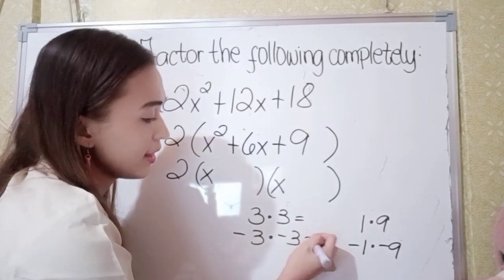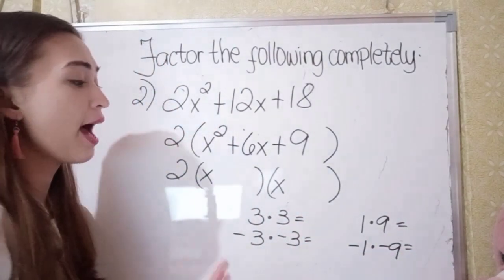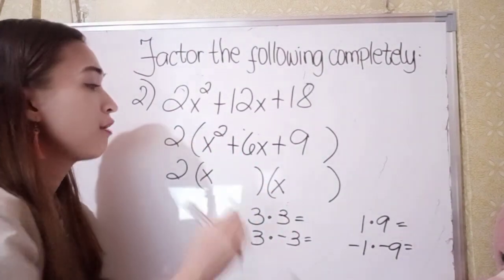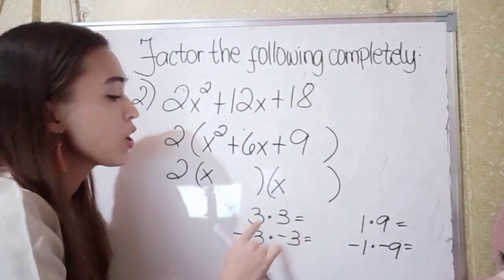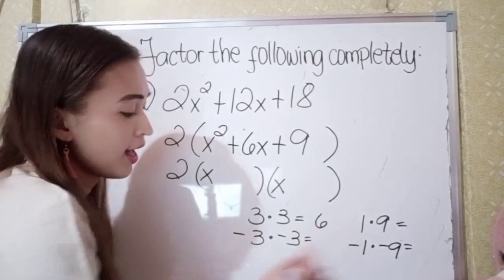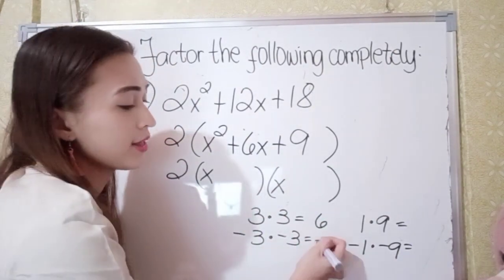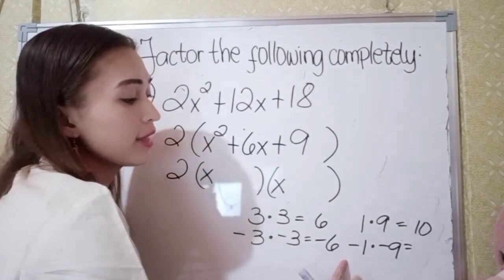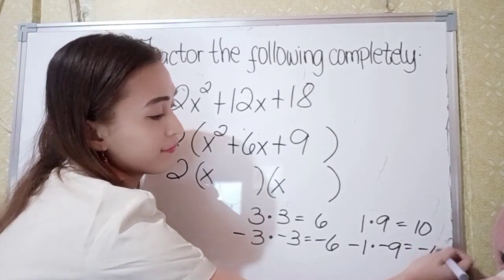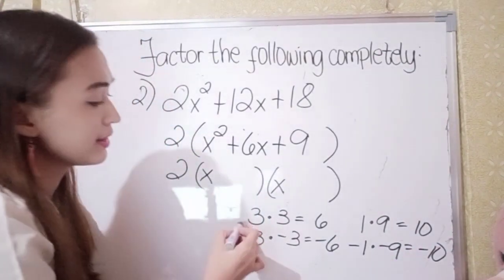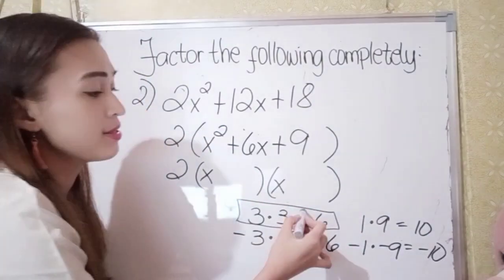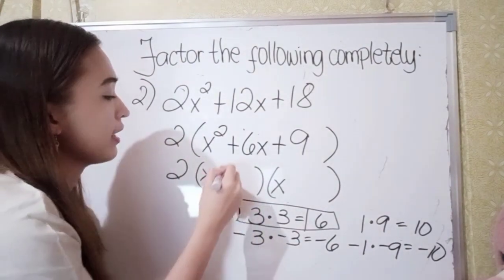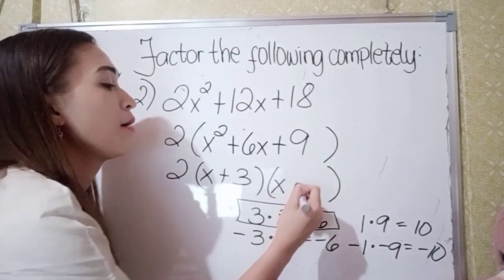Next, add them: 3 plus 3 is 6. Negative 3 plus negative 3 is negative 6. 1 plus 9 is 10. Negative 1 plus negative 9 is negative 10. This gives us positive 6 for the middle term, so our factors are positive 3 and positive 3.